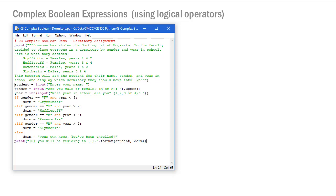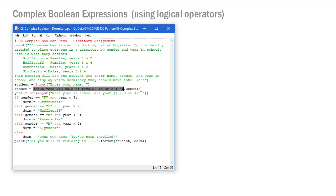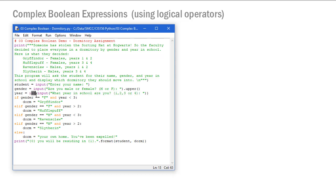The program collects input into variables: student as a string for the name, gender as a string using .upper() so lowercase m or f becomes uppercase M or F, and year cast with int() to convert the string input to an integer variable.